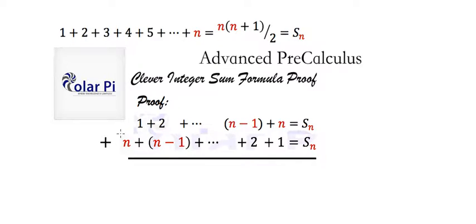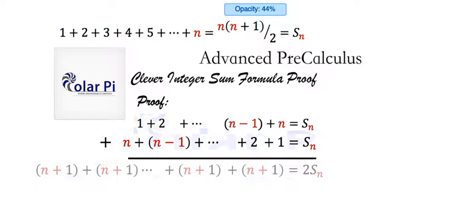Now, you could write out more terms in the middle, but what happens is every pair is going to have the sum n plus 1. It's fairly obvious with 1 and n, but it's just as obvious with 2 and n minus 1. They add to n plus 1.